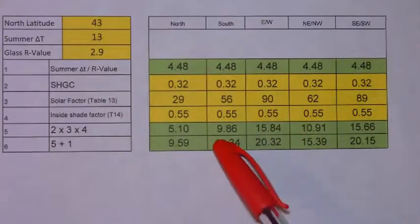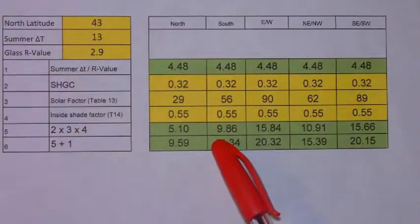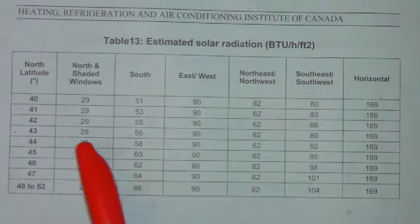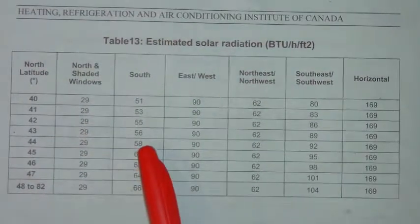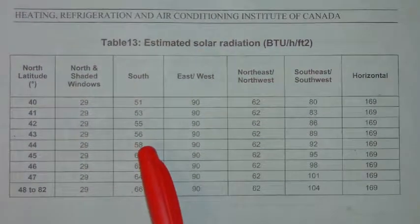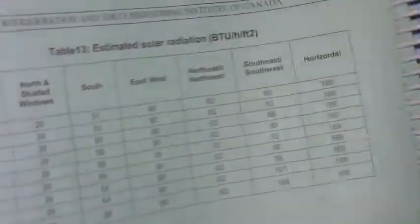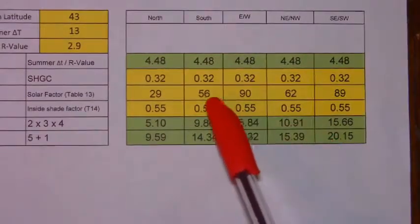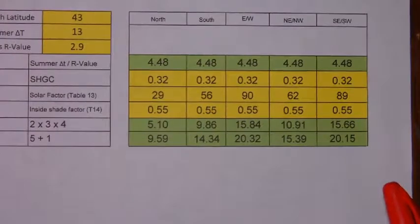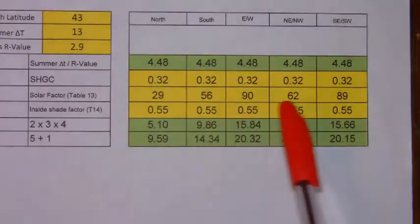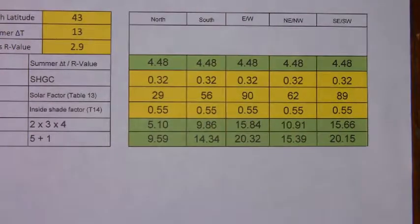For a south-facing window, again you are going to go to 43 degrees, and you will note that at 43 degrees the factor is 56. So you will input 56 in here. Carry that process on for the other directions.